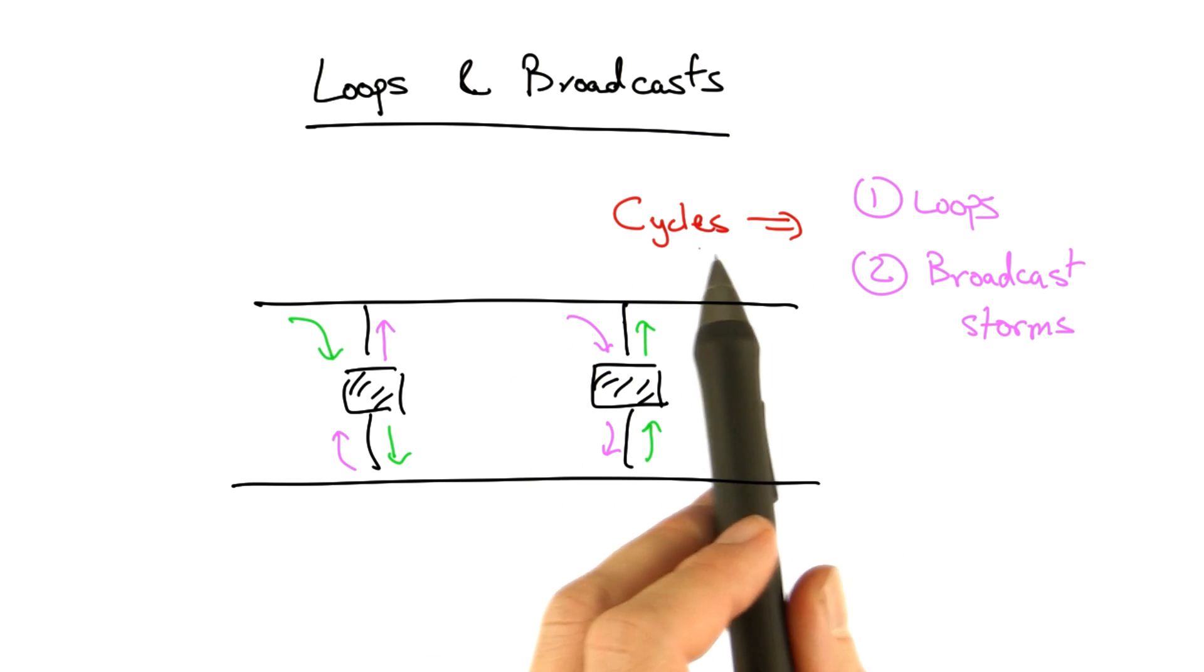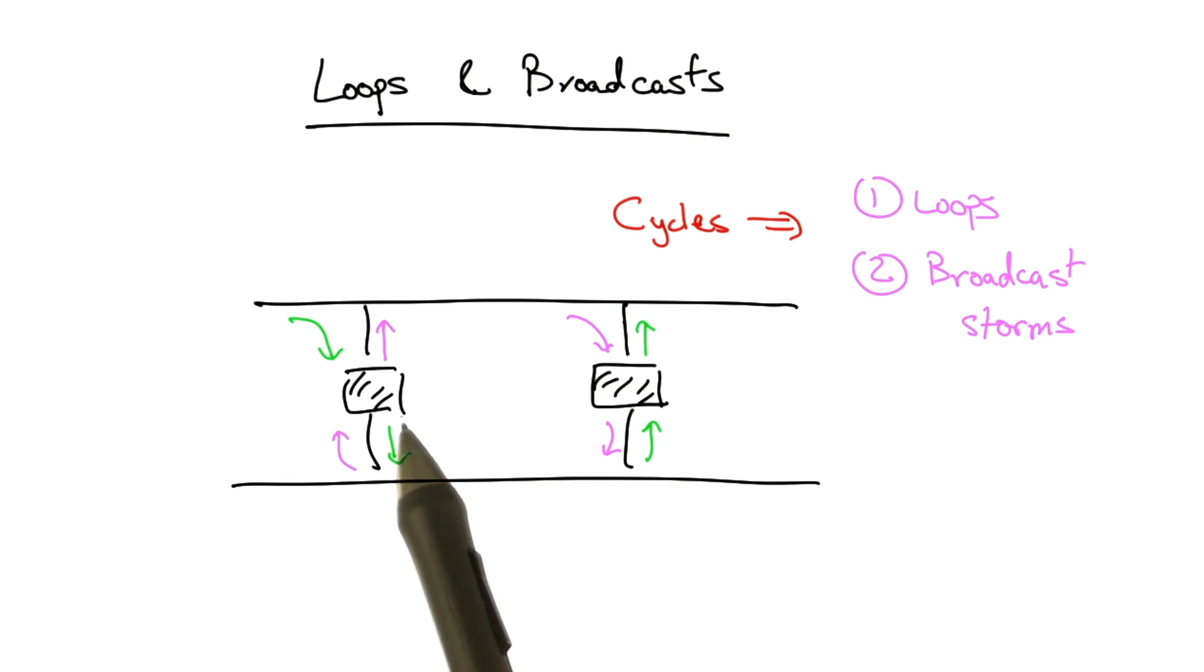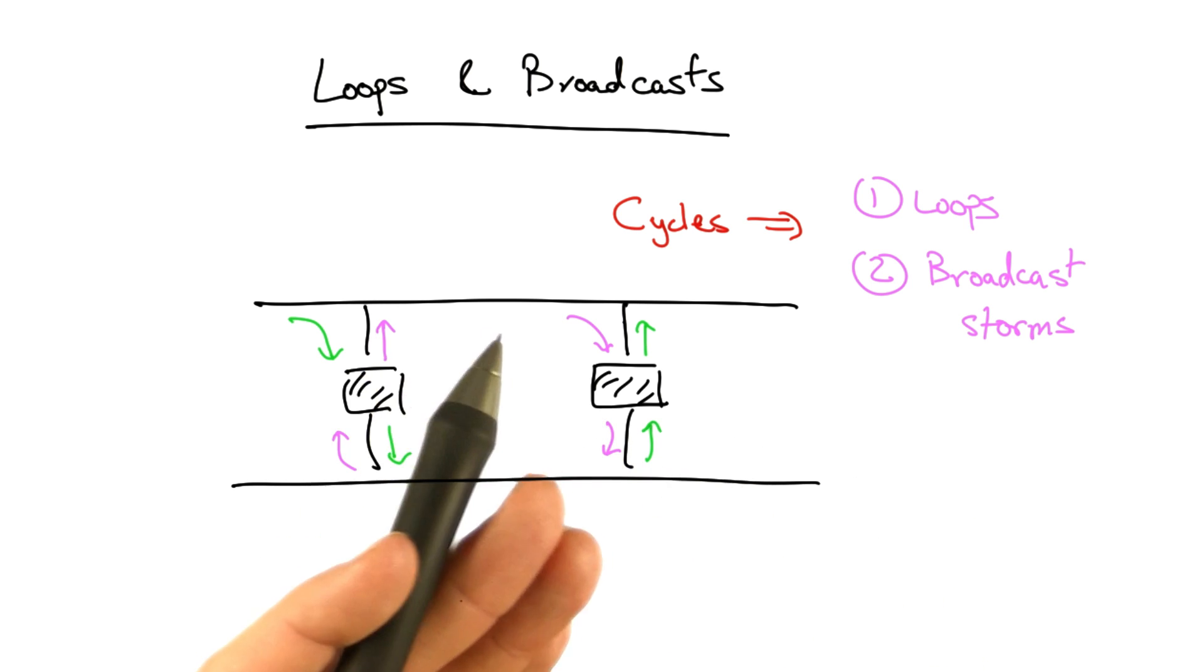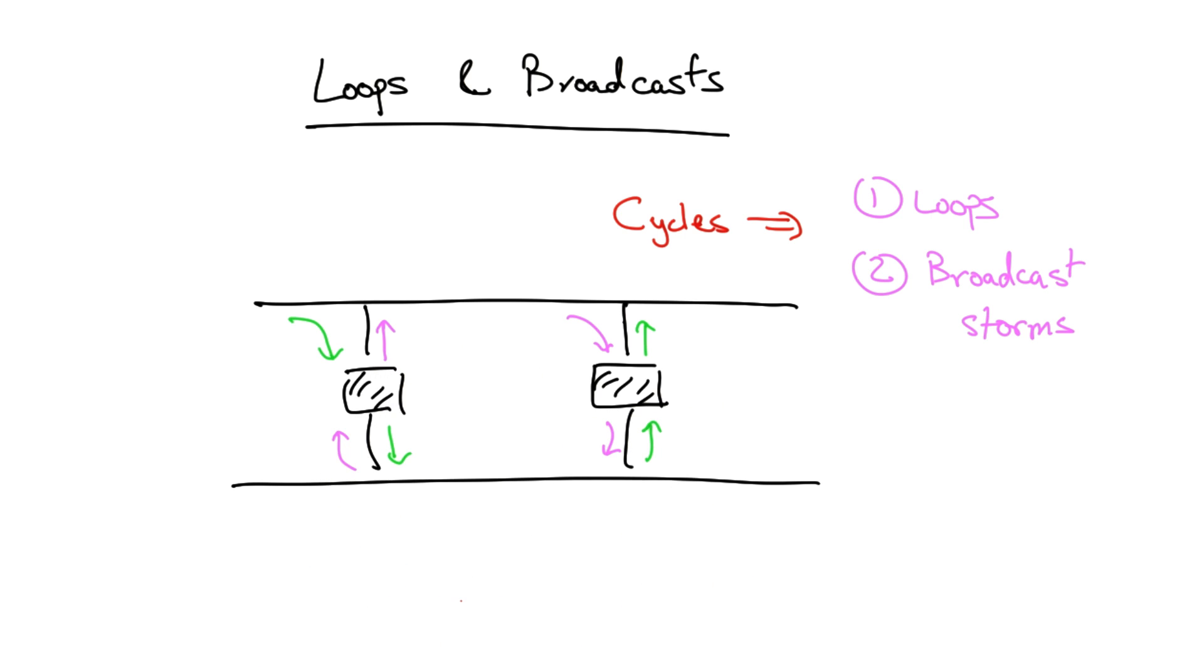So cycles in the underlying physical topology can create the potential for learning switches to introduce forwarding loops and broadcast storms. So we need some kind of solution to ensure that even if the underlying physical topology has cycles, which it often needs for redundancy, that the switches themselves don't always flood all packets on all outgoing ports. In other words, we need some kind of protocol to create a logical forwarding tree on top of the underlying physical topology.